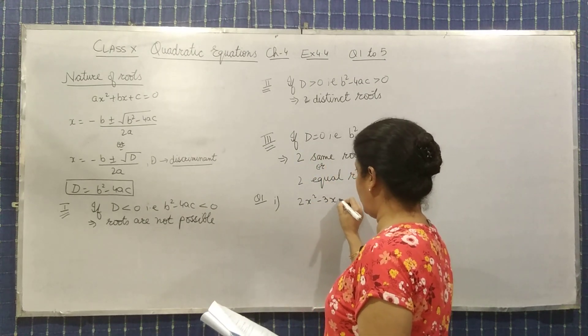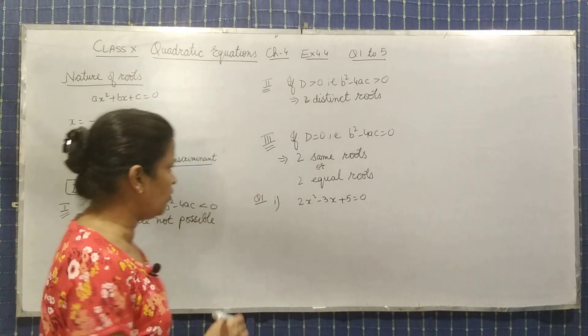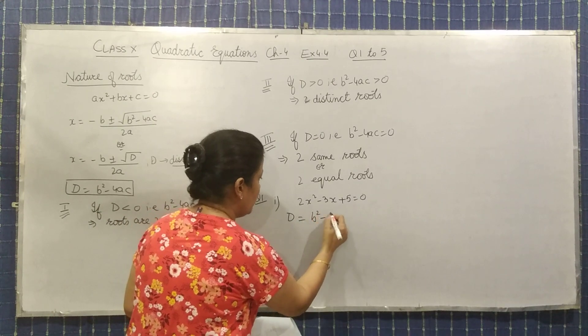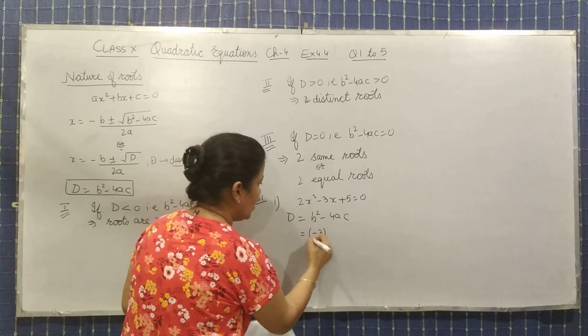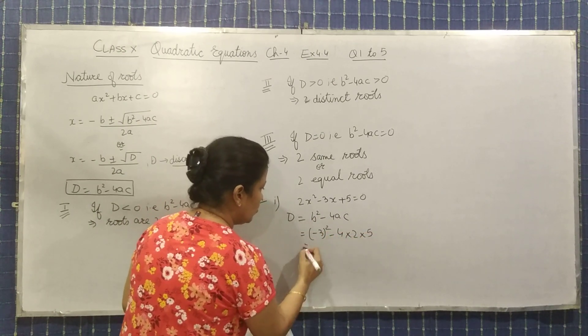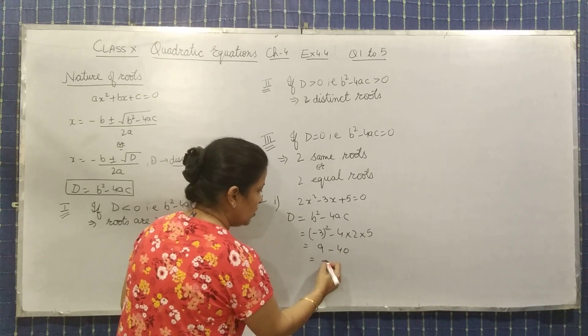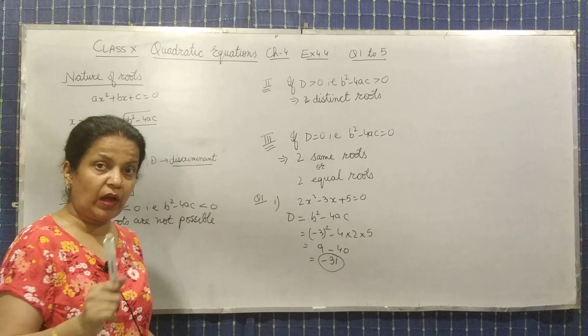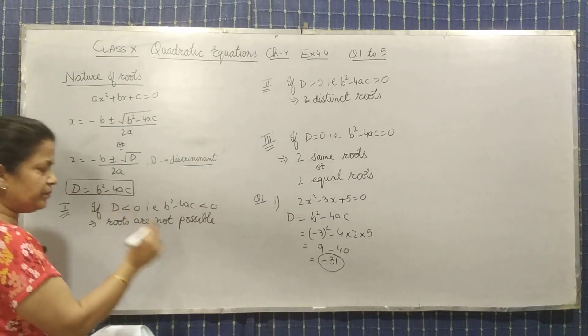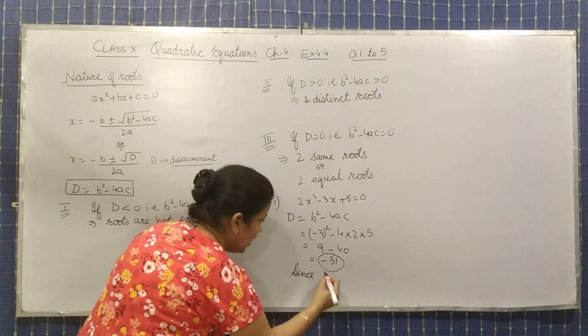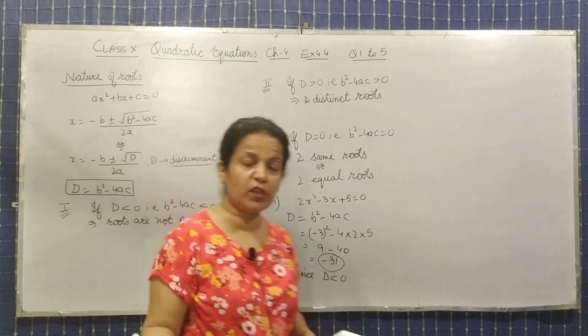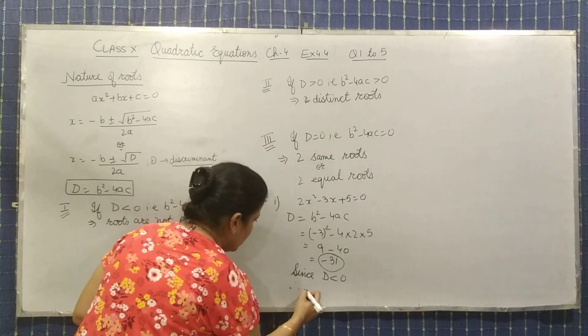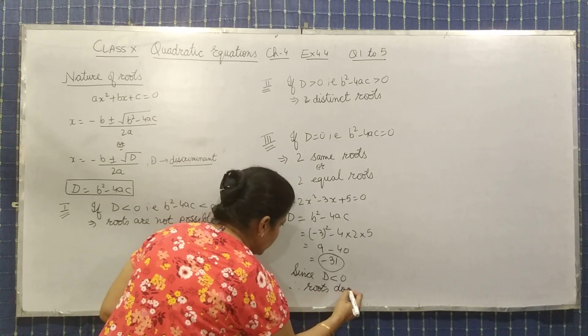First is 2x² - 3x + 5 = 0. So first, to find out the nature, you will find out d. d is b² - 4ac. That is (-3)² - 4×2×5. So it is coming as 9 - 40. So this is -31. Here you can see d is negative, means it is less than 0. So since d < 0, therefore roots does not exist. Roots are not possible.